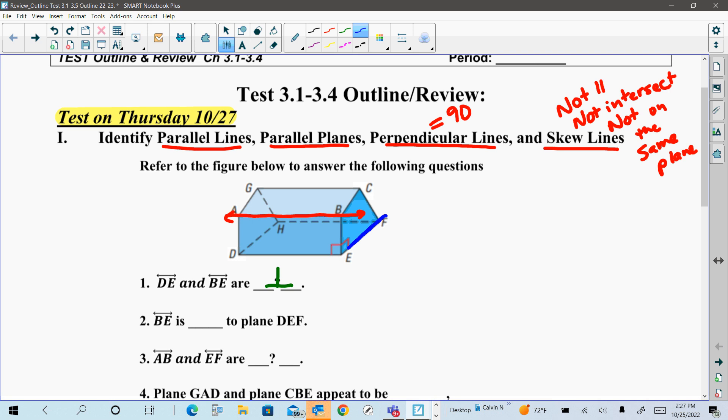AB is on the top plane here, and EF is here on the bottom. And hopefully you see that these are not parallel, they do not intersect, and they're not on the same plane. One's on top, or on the front face, or top face, and one's on the bottom. So this would be skew.